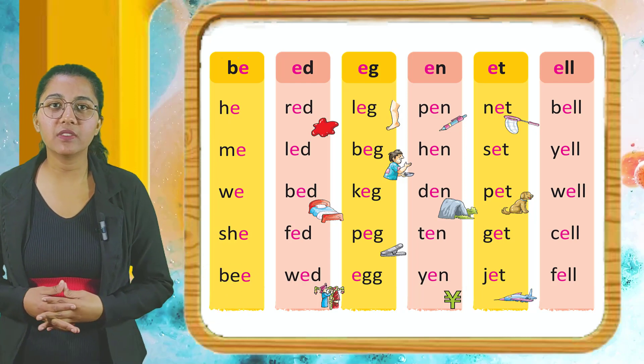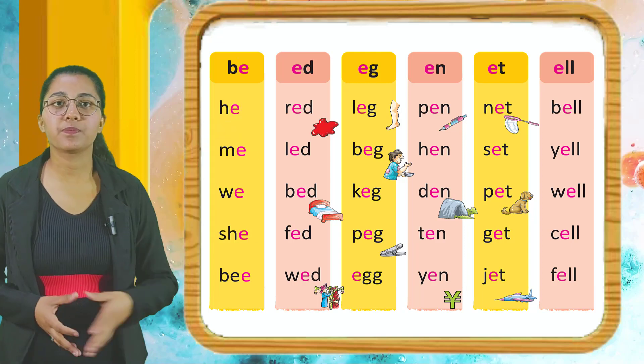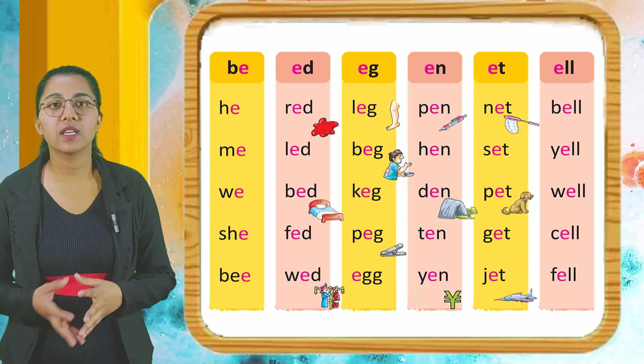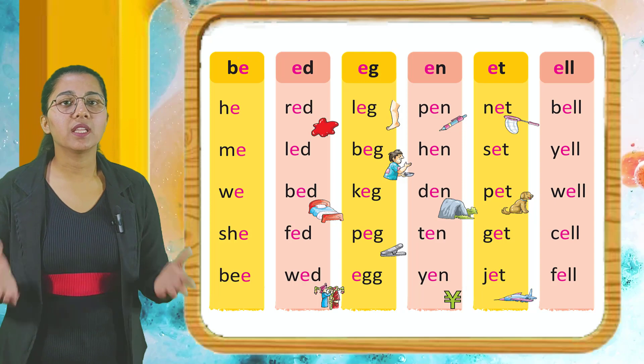Now let's read the words having EN. Pen, hen, den, ten, yen.